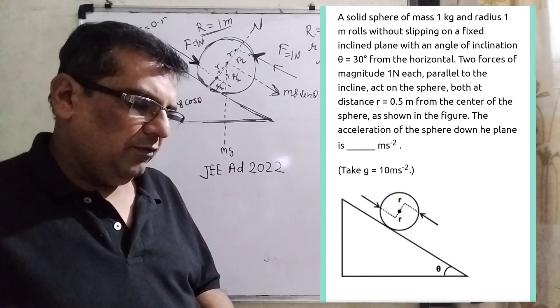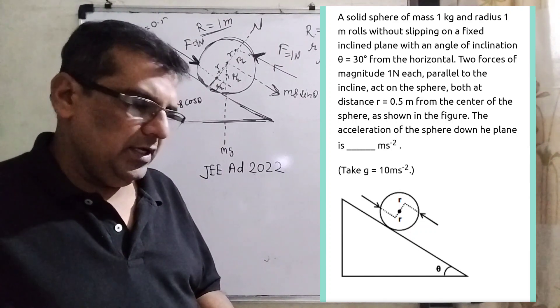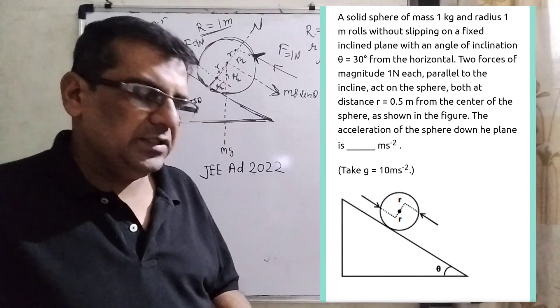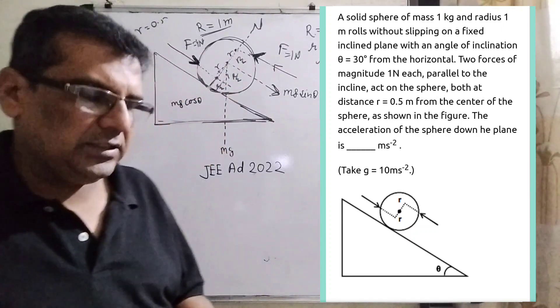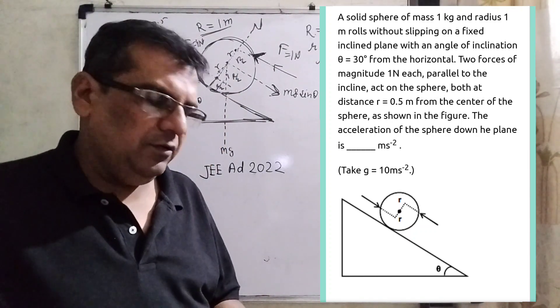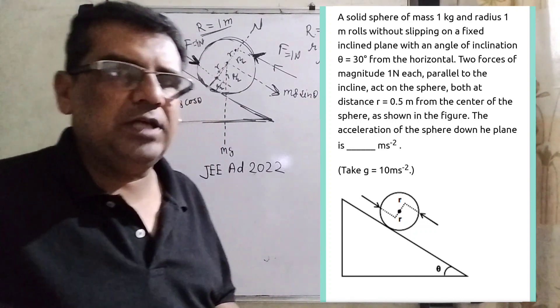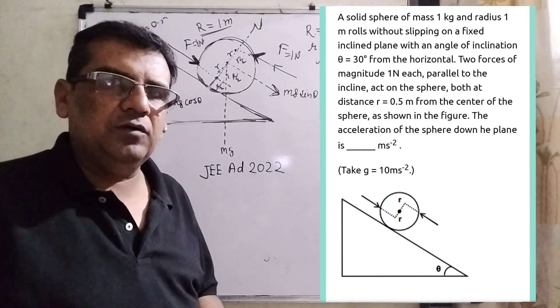The acceleration of the sphere down the plane is in meter per second square. We have to find out the linear acceleration and take g equal to 10 meter per second square. And this question is asked in JEE Advanced 2022.